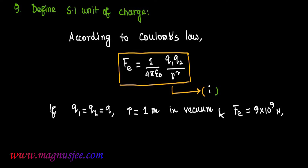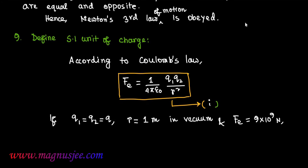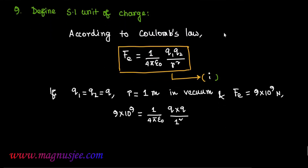Putting these values in equation 1, we get: (1 / 4πε₀) × (Q × Q) / 1² = 9 × 10⁹ Newton. Substituting the value of the electrostatic force constant 1/4πε₀ in vacuum gives us 9 × 10⁹ × Q².